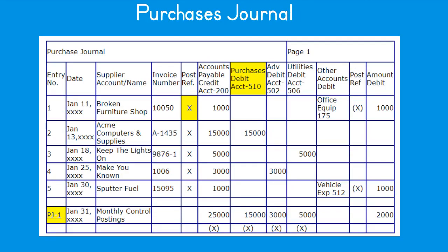The purchases journal has these basic features: header with journal name and page; entry number; date column; description column for the payee/supplier name and additional information; invoice number reference column for the supplier's invoice number; posting reference for subsidiary ledger updates; debit columns for regularly occurring types of expenses or expenditures; a credit column for the accounts payable control account; and a special other debits column for any transactions that don't have their own debit account special column.